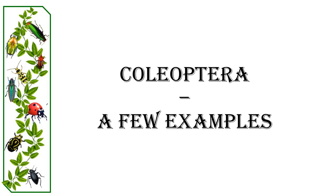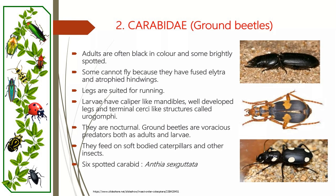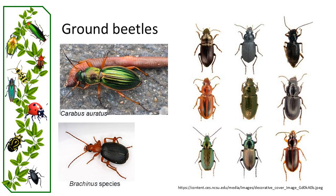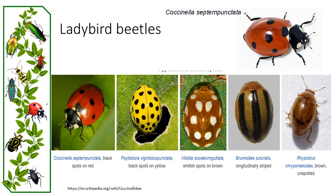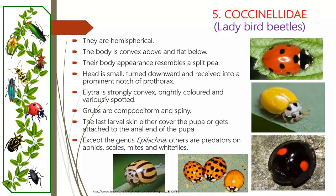Let's look at some examples of well-known beetle families and their significance. Carabidae, or ground beetles, is one of the largest families of beetles with over 40,000 described species. Ground beetles are found in a variety of habitats and play important roles as predators, helping to regulate insect populations. Coccinellidae, or ladybird beetles, known as ladybugs or lady beetles, are among the most recognizable and beloved insects around the world. They are important predators of aphids and other soft-bodied insects, making them valuable allies in biological control efforts.